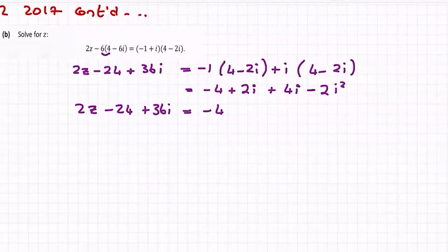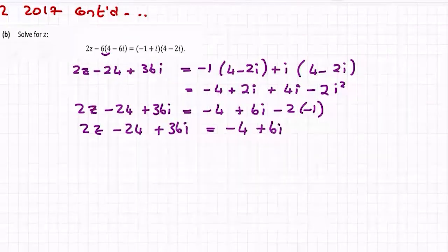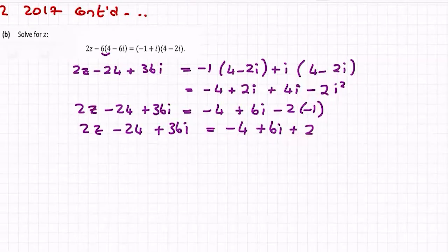So I have 2z minus 24 plus 36i equals minus 4. Now plus 2i and plus 4i is plus 6i, and then minus 2 times minus 1. 2z minus 24 plus 36i equals minus 4 plus 6i, minus 2 by minus 1 is plus 2. You can see that changing again to the plus 2.